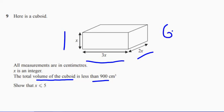So if I multiply them together, that's 6x cubed. And it tells me that the total volume of the cuboid is less than 900. So we can now write down it must be less than 900.